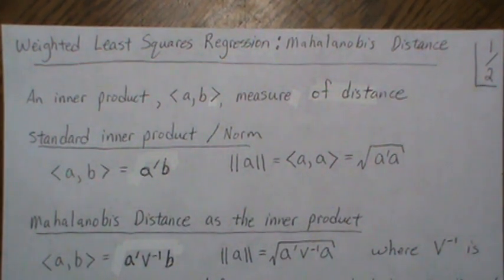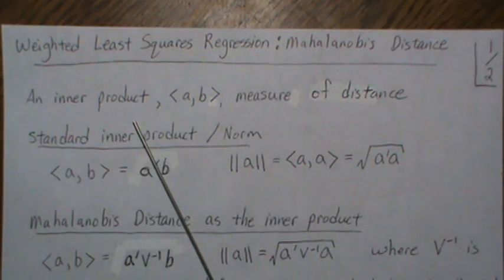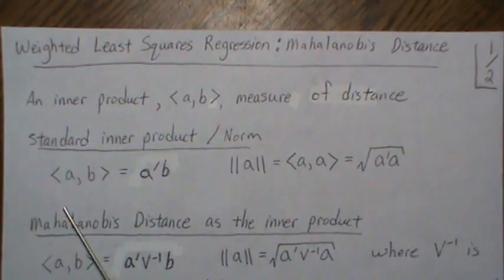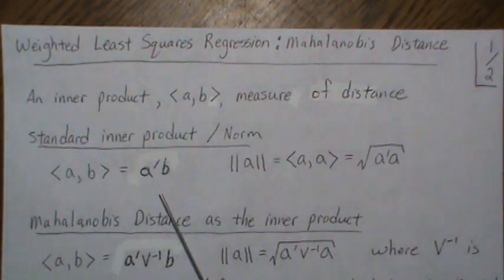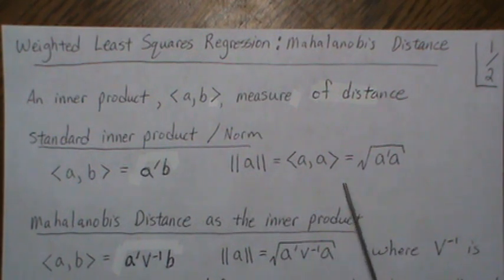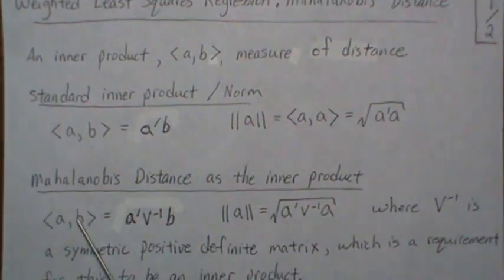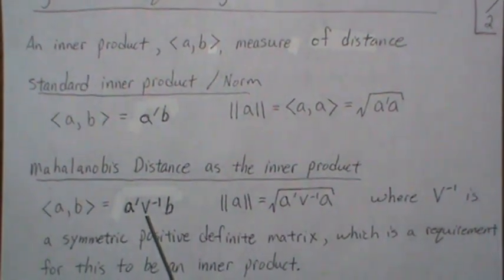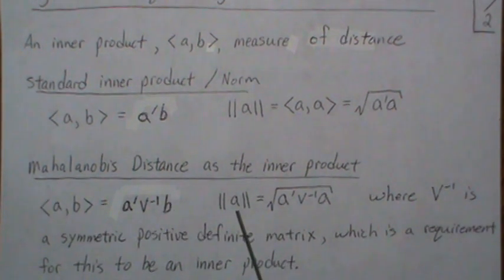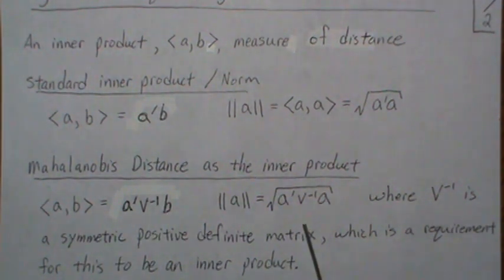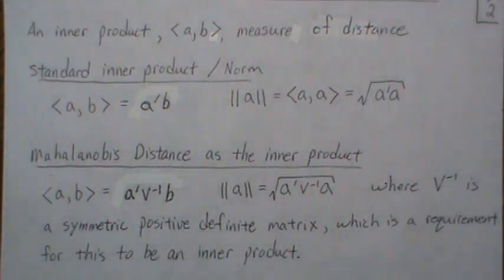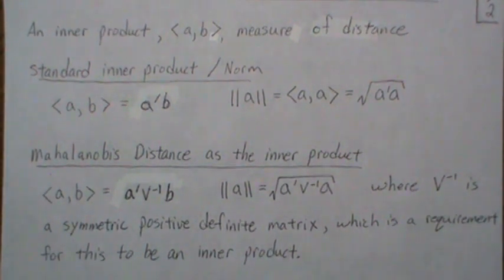There's so much more to come. Now in this video we're going to change the inner product a little bit. The inner product can be thought of as a measure of distance in a sense — the standard inner product is the dot product, and the norm measures how long a vector is. We're going to bring in the Mahalanobis distance as an inner product, so the inner product will be x^T V⁻¹ y, where V⁻¹ is a symmetric positive definite matrix, and the norm will be the square root of that. For this to be a true inner product, the matrix must be symmetric and positive definite — that's a background assumption for this video.